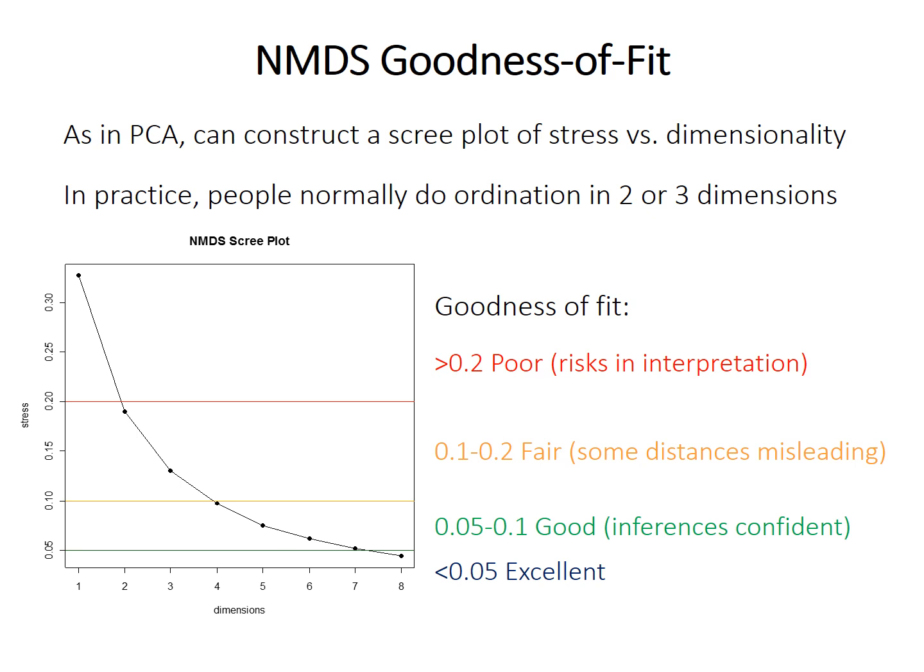There are some rules of thumb: a stress greater than 0.2 is a fairly poor fit and carries some risk of error when interpreting relative positions of points. A stress between 0.1 and 0.2 is an okay fit — some distances might be slightly inaccurate but overall pretty good. A stress between 0.05 and 0.1 is considered quite good, allowing fairly confident inference. A stress less than 0.05 is excellent, but you almost never see this with complicated data.